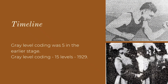An image of an outlet was the first picture transported in the Bartlein cable transmission system. This picture was coded to 5 gray levels in the initial stage. In 1929, the gray level coding of an image was increased to 15 gray levels.